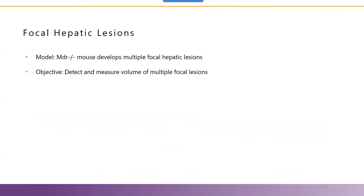Model of pre-neoplastic lesions in the liver. The first model is the transgenic MDR mouse model, spontaneously developing pre-neoplastic changes in the liver. As toxicologic pathologists, we know that histopathology is useful to phenotypically characterize the altered foci. However, we lack a tool which will locate, count, and measure the volume of these foci in the entire hepatic tissue.